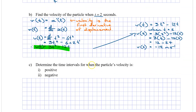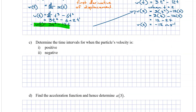Now determine the time intervals when the particle's velocity is positive and negative. Since velocity means the first derivative, we're working with v(t) = 3t² minus 12t. Looking at this second-order polynomial, it can have between zero and two roots. We need to find when velocity equals zero by factorizing, then plot a sign diagram to see when it's positive and negative.